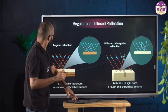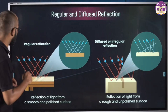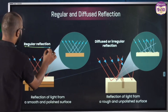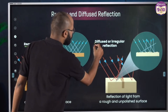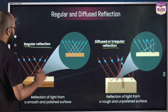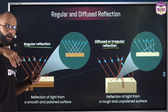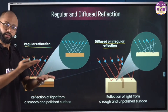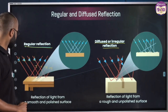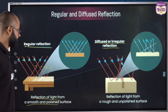We saw the difference between rough surfaces and smooth surfaces in reflection. First, smooth surfaces perform what we call regular reflection. All the incident rays are coming in parallel, and all the reflected rays are also parallel — because the surface is smooth, there's no issue. All the reflected rays are also parallel. This is what we call uniform or regular reflection — reflection of light from a smooth and polished surface.